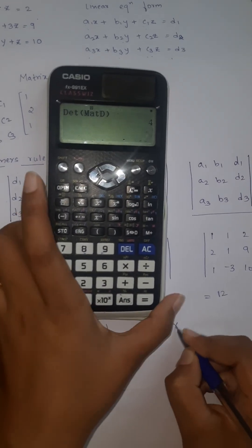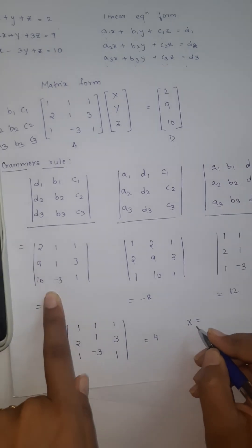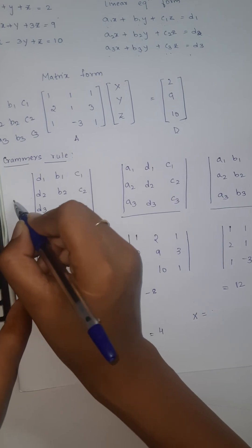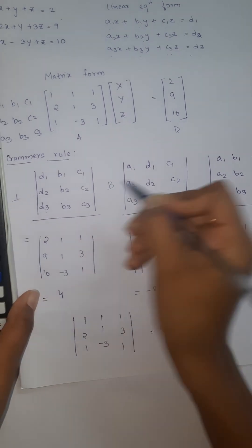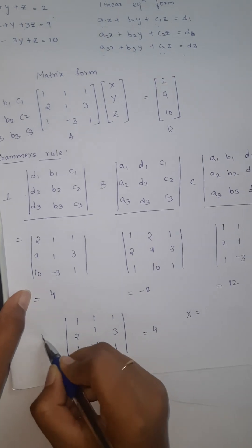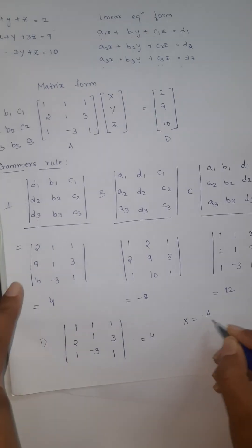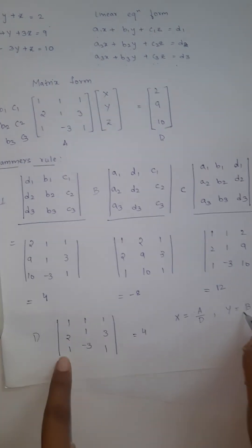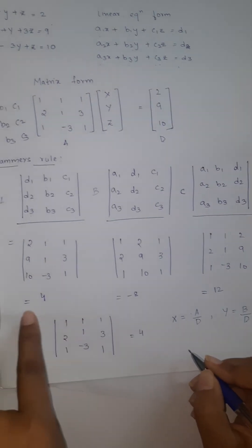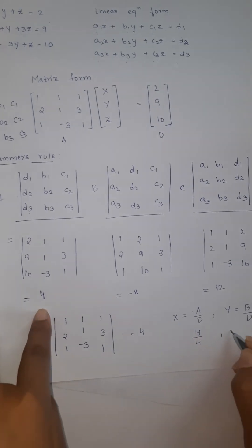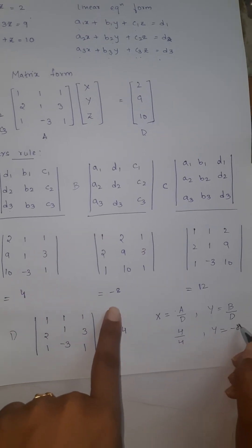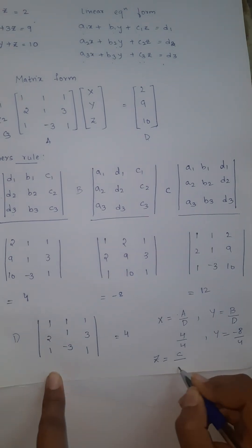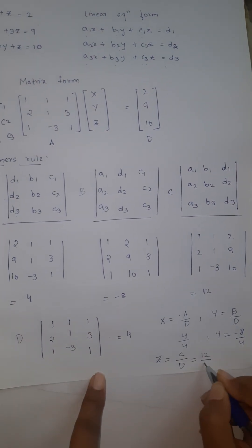The final answer X is this. Whatever answer we got here, that is 4. Imagine this is A, B, C and this is D. Now we need our X value is A by D and Y value is B by D. A by D, what do we get here? 4 by 4. Y will be equals to minus 8 by 4. Then again Z will be equals to C by D that is 12 by 4.